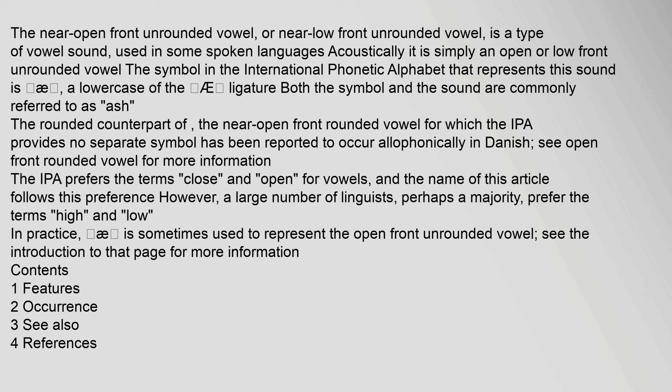The near-open front unrounded vowel, or near-low front unrounded vowel, is a type of vowel sound used in some spoken languages. Acoustically it is simply an open or low front unrounded vowel. The symbol in the International Phonetic Alphabet that represents this sound is ash — a lowercase of the ash ligature. Both the symbol and the sound are commonly referred to as ash.